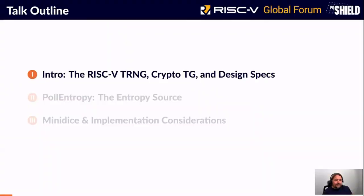I'll start with the description of the crypto DRBG itself, the design specifications and the workings of the crypto task group — the little group that specifies the crypto extensions for RISC-V. After that, I'll describe the actual instruction for entropy and then discuss implementation, including our reference implementation MiniDICE.